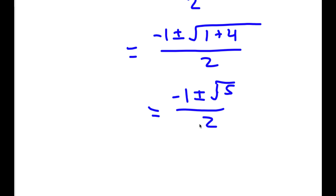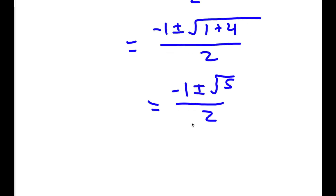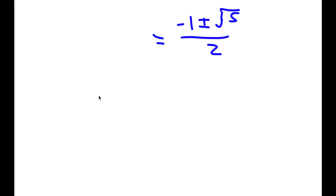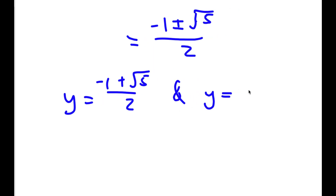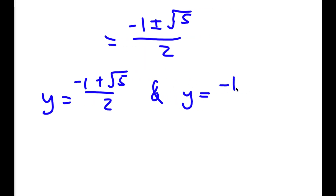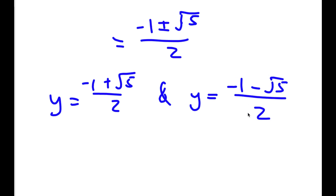This gives me two values of y: y equals negative 1 plus the square root of 5 over 2, and y equals negative 1 minus the square root of 5 over 2.